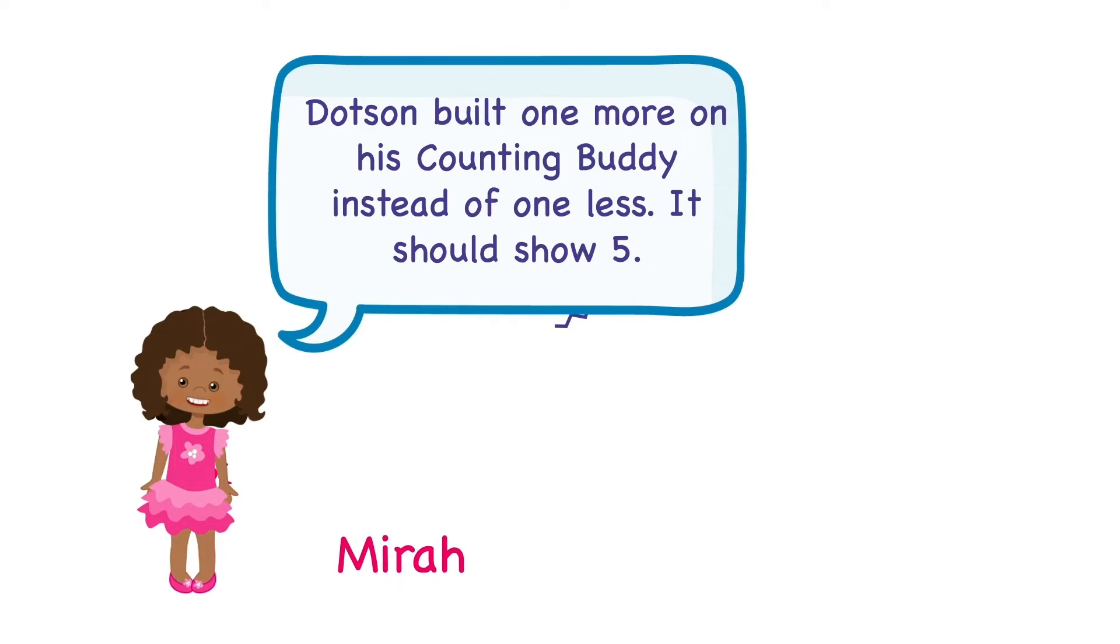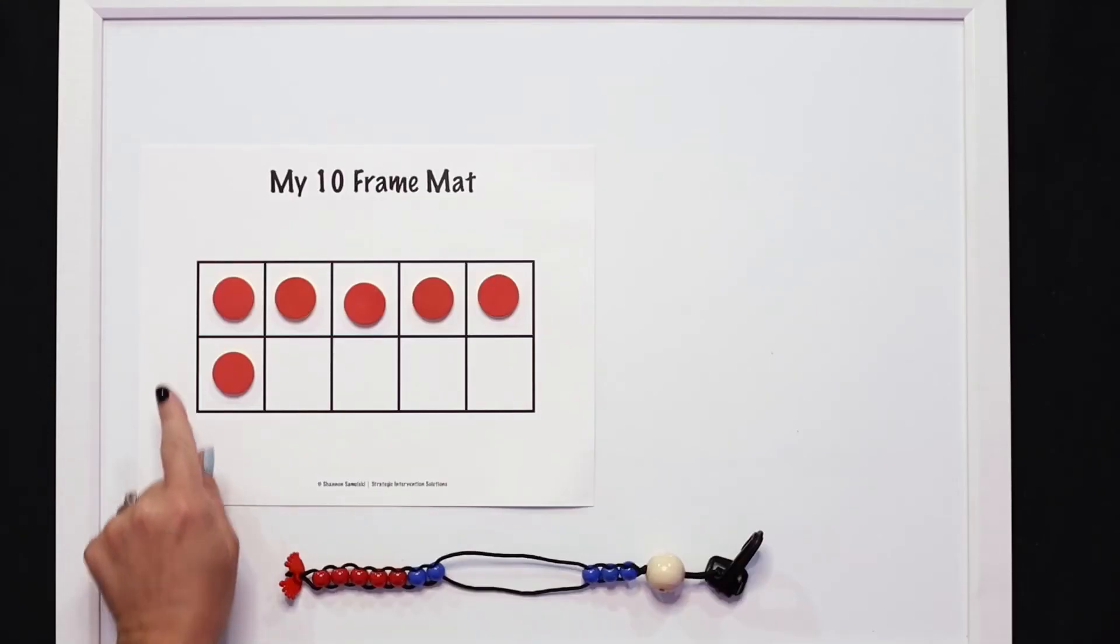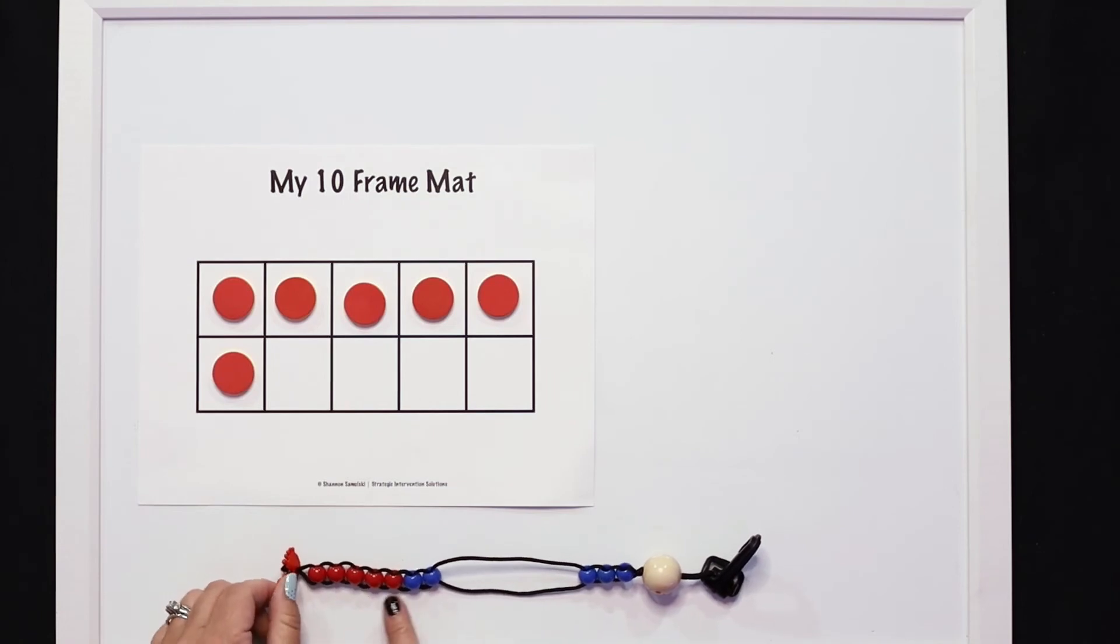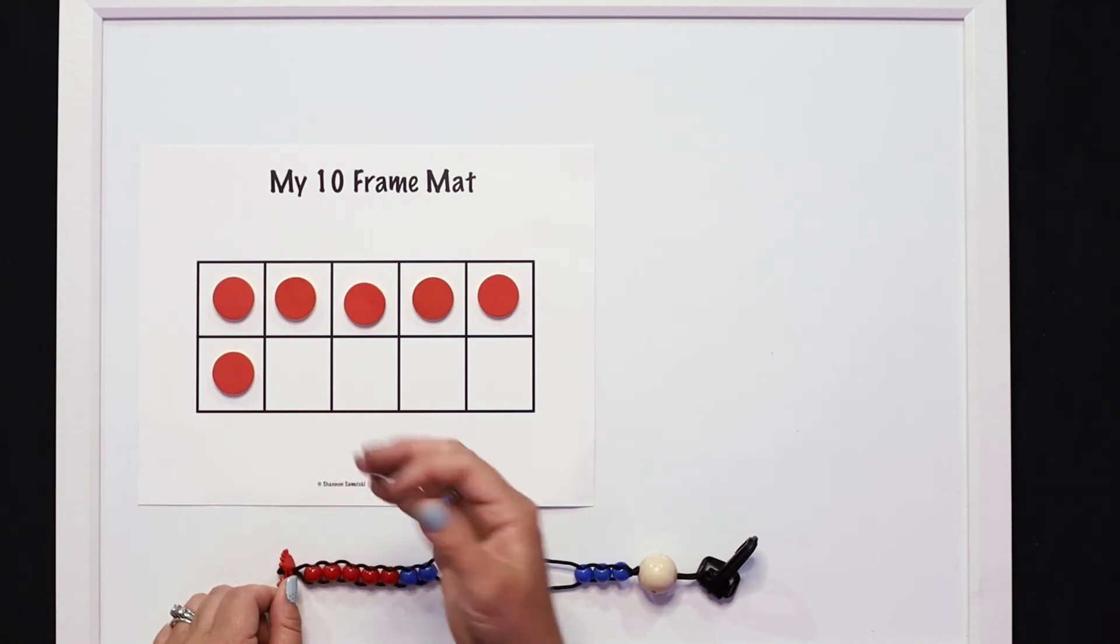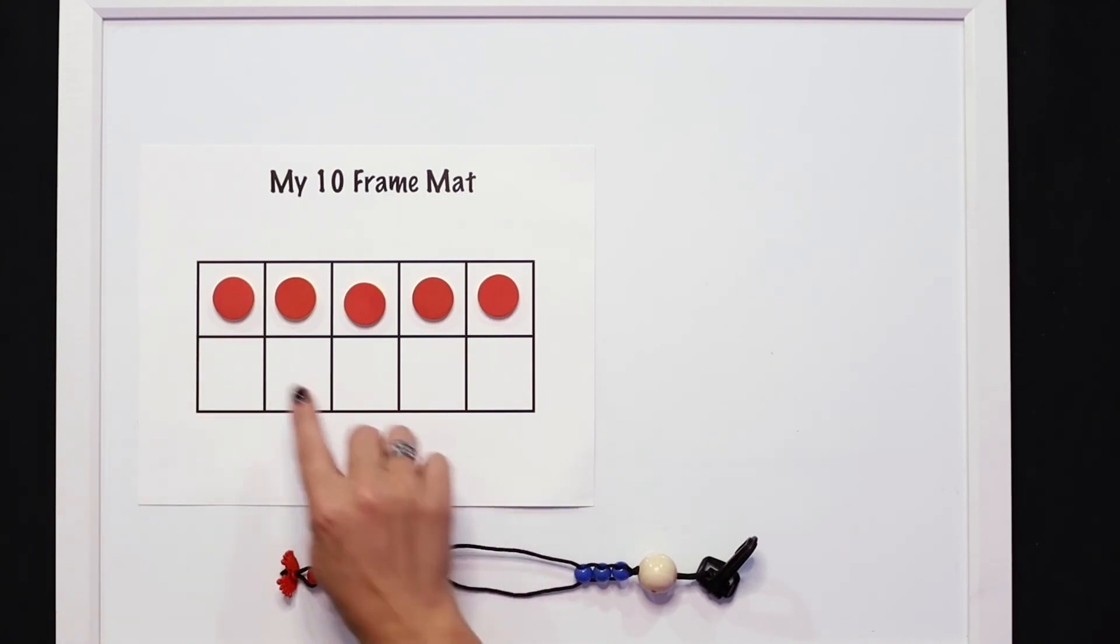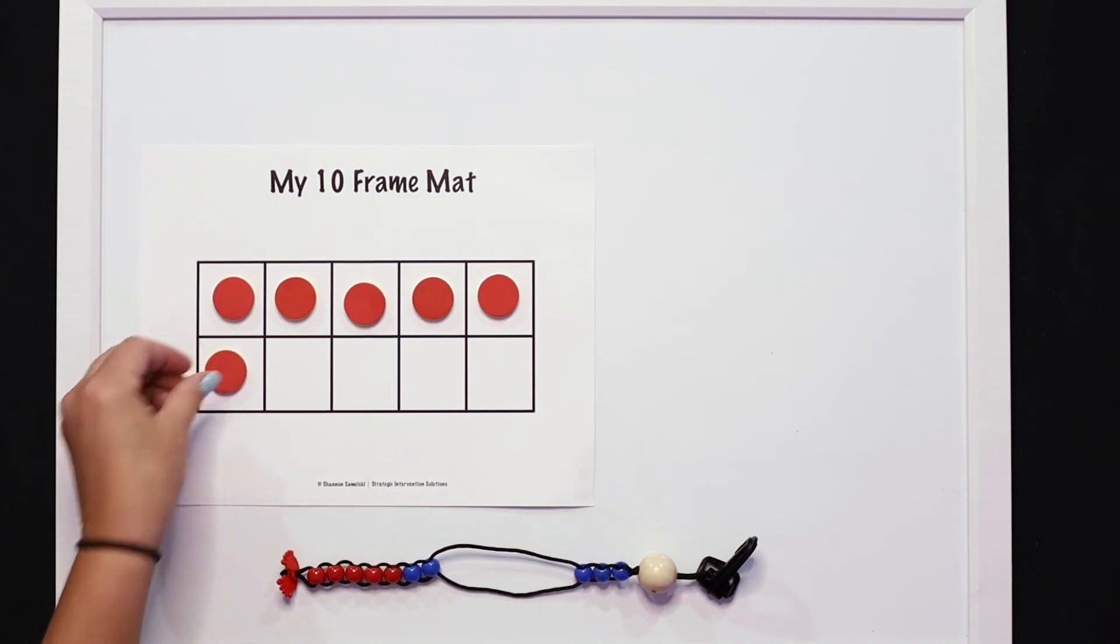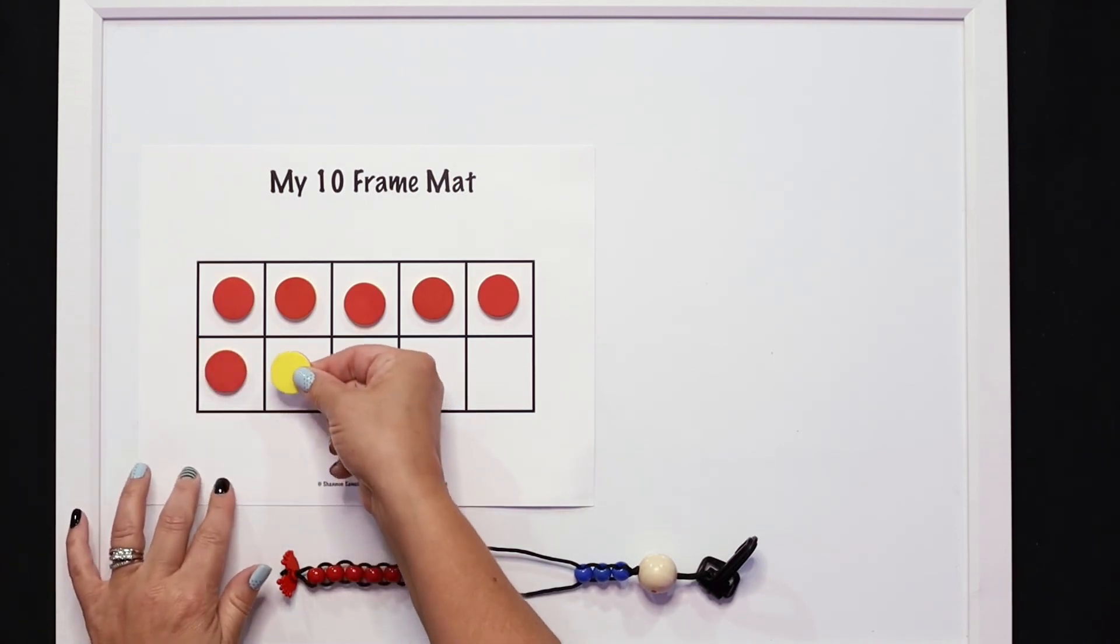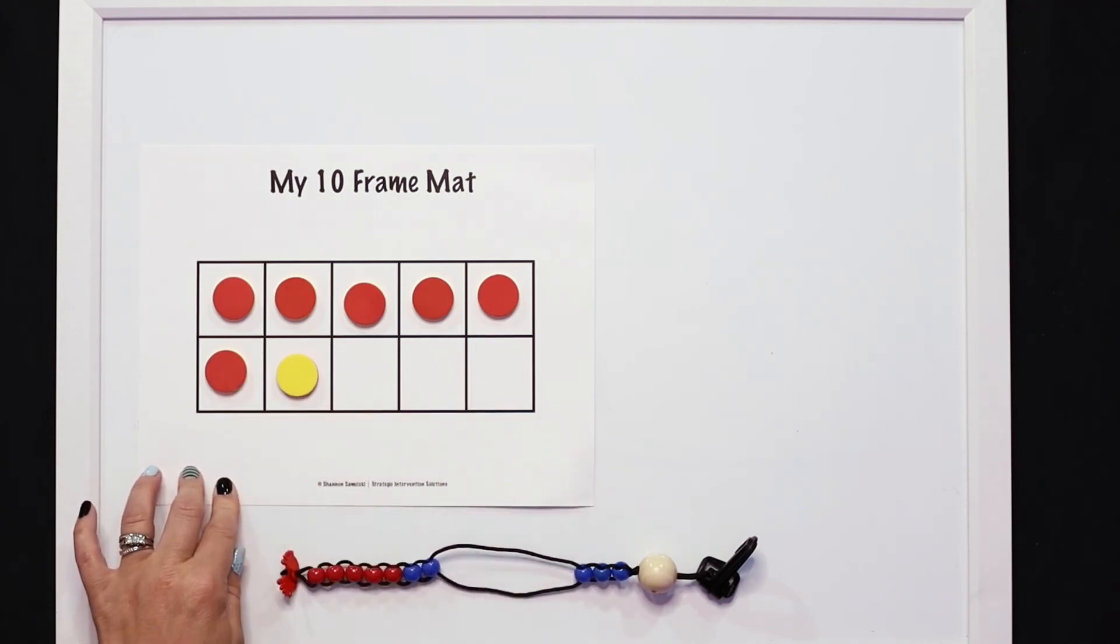Mira said that Dodson built one more on his counting buddy instead of one less. It should have been five. Let's take a closer look. So we know that there was six here, and originally Dodson had seven. But remember, one less means take away. So if I do it here and I have six and I take one away to show one less, it would be five. I think Dodson accidentally did one more, which would have been seven. But remember, it said do one less.